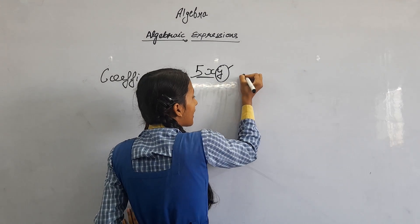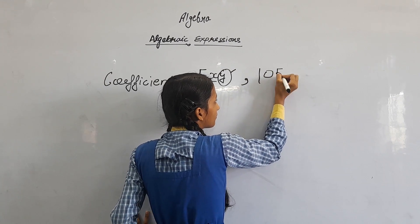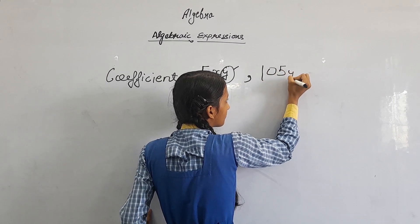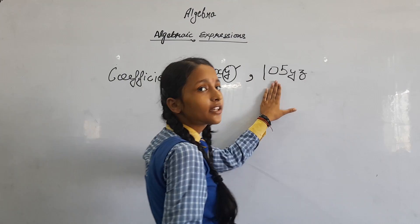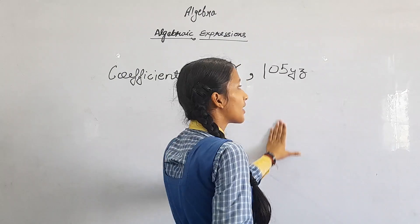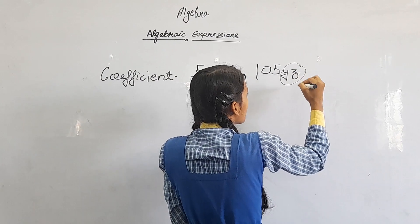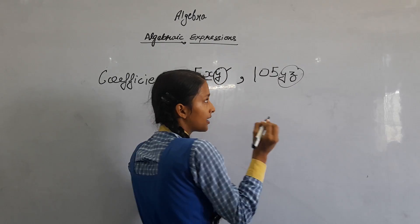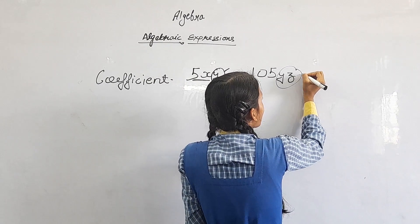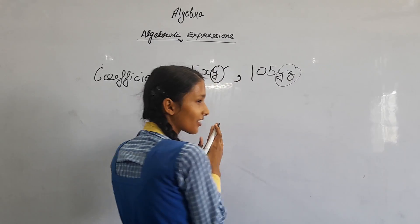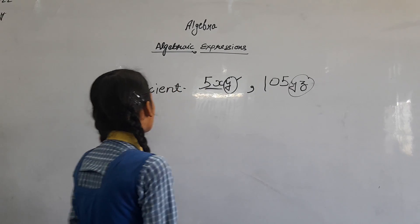We will get another example. If here it asks for the coefficient of 105, there are two remaining factors — y and z. So the coefficient of 105 is y, z.